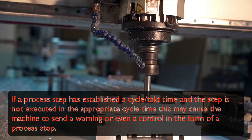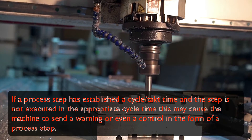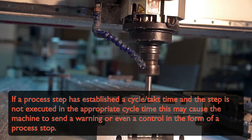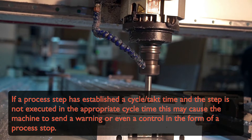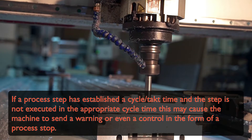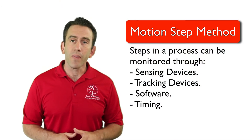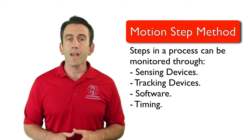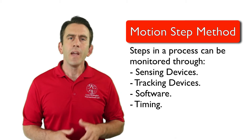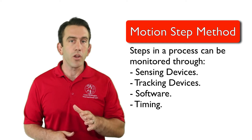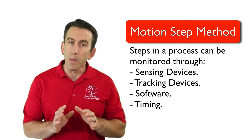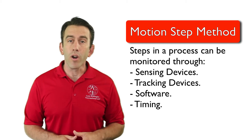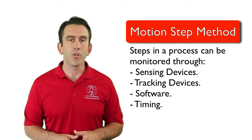For example, if a process step has established a cycle time and the step is not executed in the appropriate cycle time, this may cause the machine to send a warning or even a control in the form of a process stop. The motion step method oftentimes uses sensors and other devices to track and count steps as they occur. If the step or movement does not occur when it should, or occurs after or before the appropriate time, the sensors will trigger the equipment to send a warning and may stop the machine to regain control of the process.